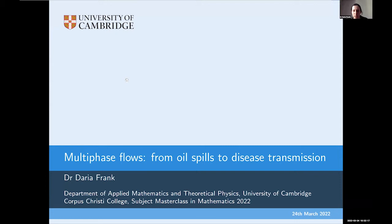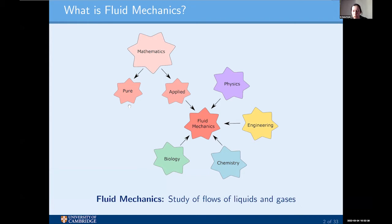That is what we are going to talk about today. Fluid mechanics is the science of flows of liquids and gases. If we divide mathematics into the pure and the applied area, then fluid mechanics is most certainly a subdiscipline of applied mathematics. However, it is a very multidisciplinary subject — it can also be regarded as part of the physical and engineering sciences, with contributions from chemistry and biology. This means fluid mechanical problems often require considering all those disciplines in their entirety.